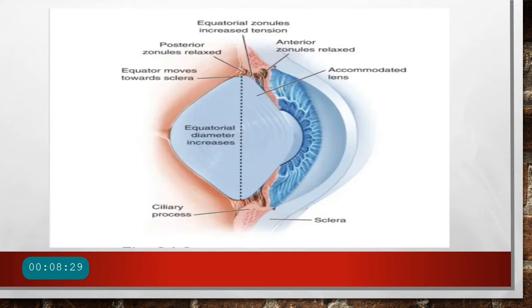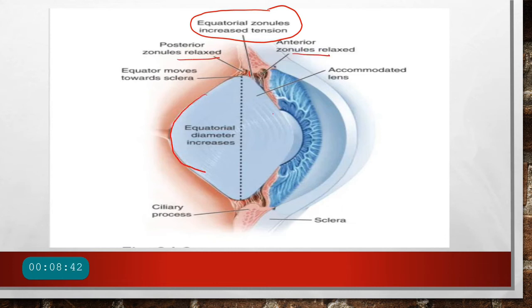This diagram explains Shachar's theory. The equatorial zonules show tension while the posterior and anterior zonules are relaxed, so only the central part of the lens increases in diameter, causing accommodation.